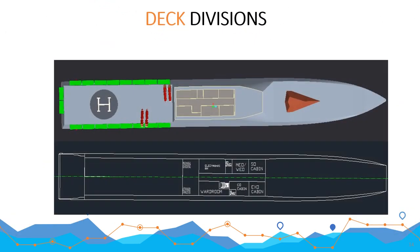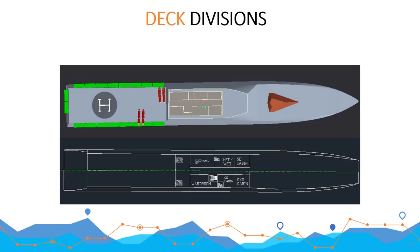This is the superstructure deck. Deck 01 contains the cabins of different officers — it's a small deck. Above deck 01 is deck 02, which is also part of the superstructure and contains different accommodations, almost the same as deck 01.